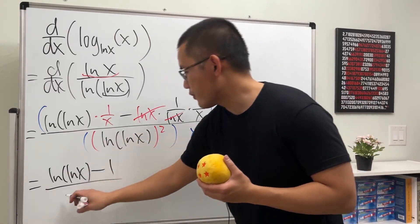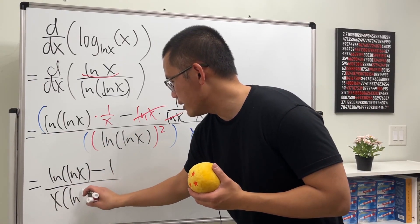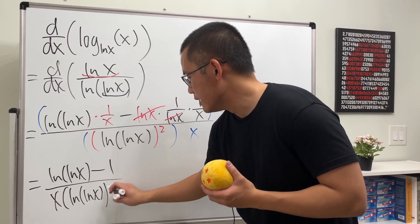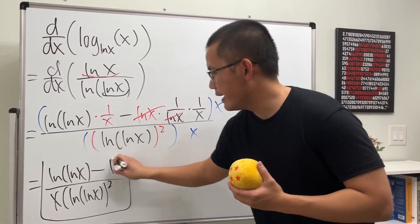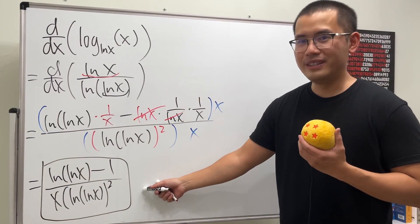And then over x in the front, and then times ln(ln(x)) squared like this. Last thing, do not put a 2 in the front, okay? And this is it. Pretty nice, huh?